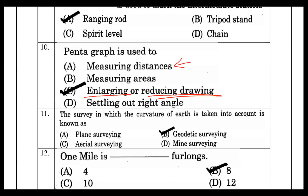For measuring distance, chain survey and tape are used. The most accurate instrument is EDM (Electronic Distance Measurement). If we need to measure area, we use a planimeter.